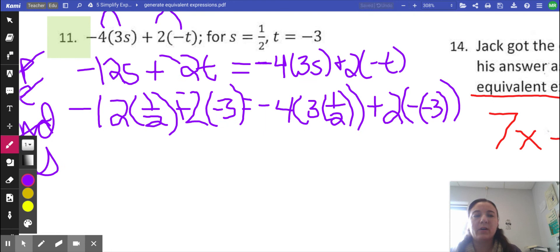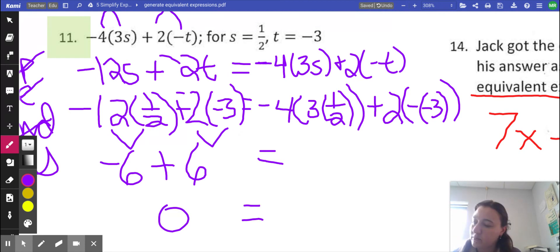So, we're going to do PEMDAS again. Do our parentheses. And just do one side at a time. There's nothing to do in these parentheses. You could consider it distributive property. There's no exponents. There is multiplication. So, half of a negative 12 is a negative 6. You don't have to know that. You need to know how to put it in the calculator. And this is a negative 2 times a negative 3. So, that is a positive 6. And now, addition is all I have left. These are opposites. So, this is going to make 0.